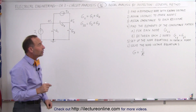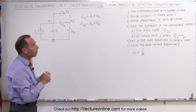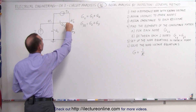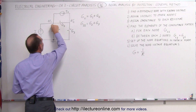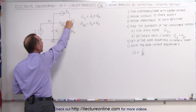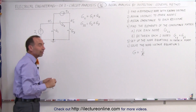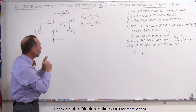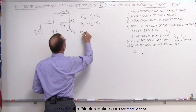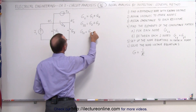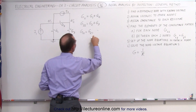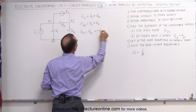Finally, we need to find G12 and G21, which represent the conductance directly connecting node 1 to node 2. Notice there is only one conductance that connects them directly; another path requires going through two resistors, so that doesn't count. G12 equals G21, and the conductance directly between the two nodes is G2.